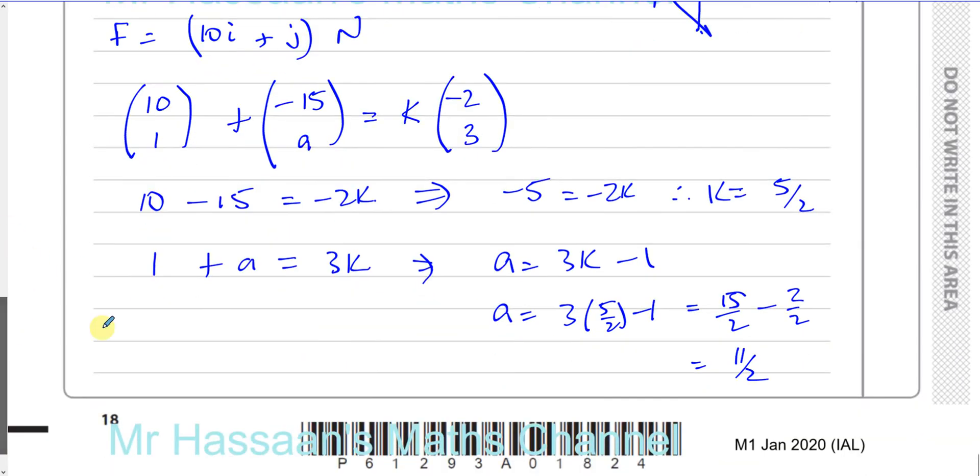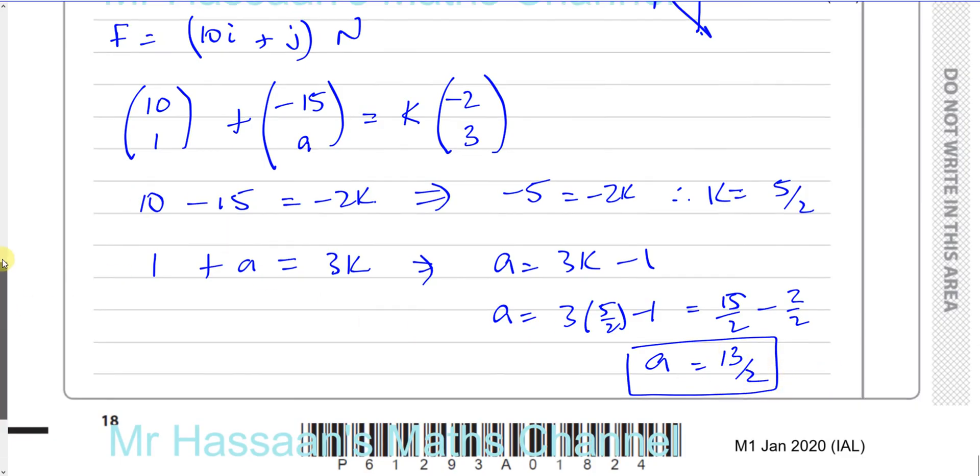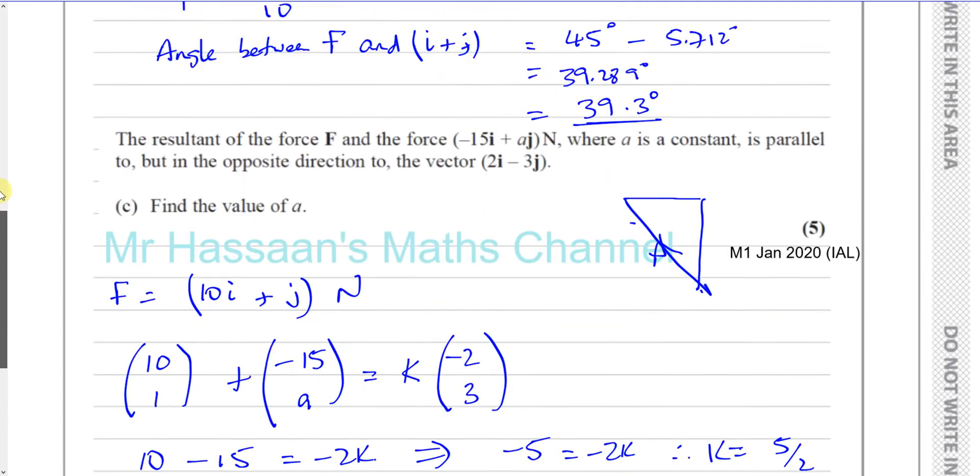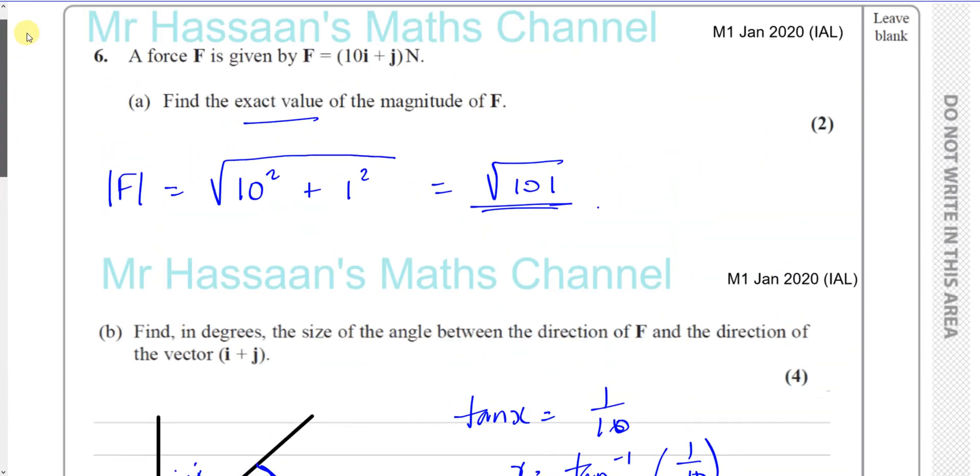So, the value of A is 11 over 2. Sorry, 13 over 2. What am I talking about? Silly me. 15 minus 2 is 13. 13 over 2. So, that would be 6.5. A is equal to 13 over 2 which is 6.5. We can leave it like that. Okay, so there we have the answer to part C. And that's question number 6 completed.